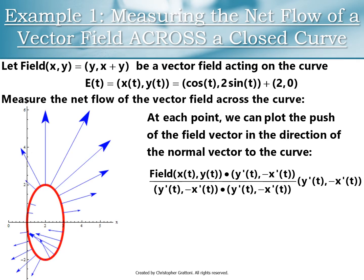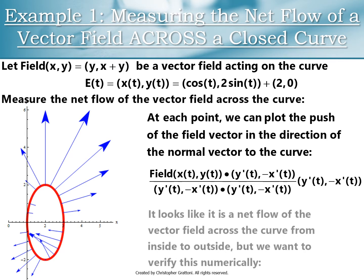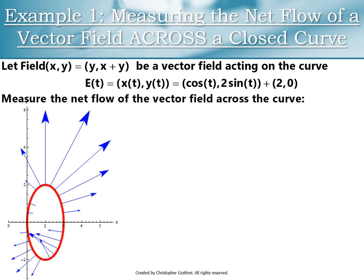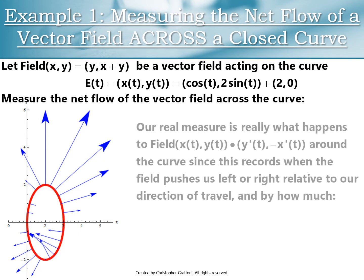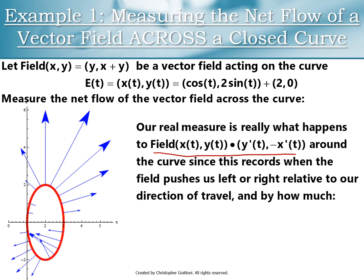Pretty clear what's going on. I can see this is going to compute to inside to outside. The net flow of the vector field across this curve is in the direction of the outer normal vectors. I can get a more precise answer using an integral to accumulate this effect numerically. The key observation for setting up the integral is that field dot normal is the expression that measures what's going on — at each point I can figure out if field vectors are pushing with or against my normal vectors.